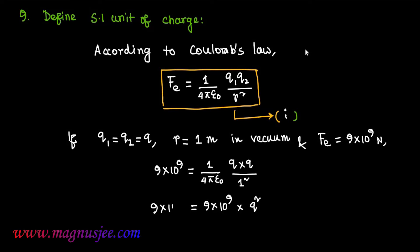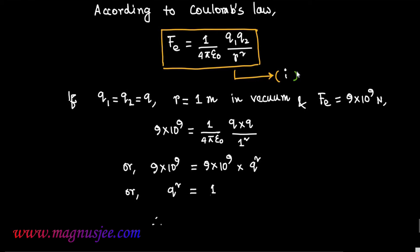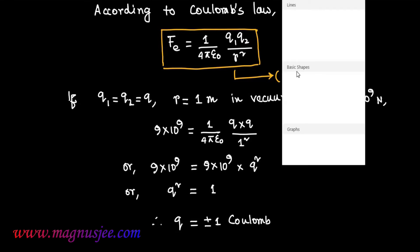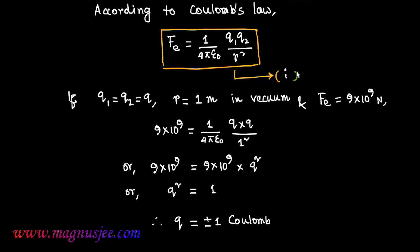On the left-hand side we have 9 × 10⁹ = 9 × 10⁹ × Q², so Q² = 1. Therefore, Q = ±1 Coulomb.